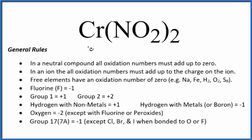To find the oxidation number for the Cr in Cr(NO2)2, this is chromium 2 nitrite, we'll use these rules here.